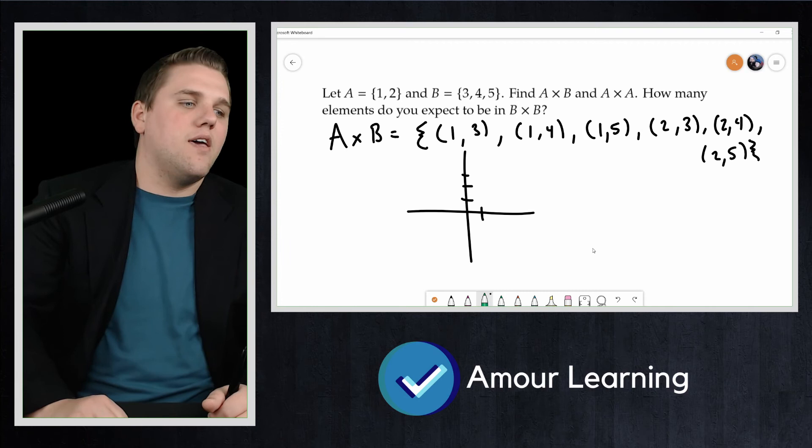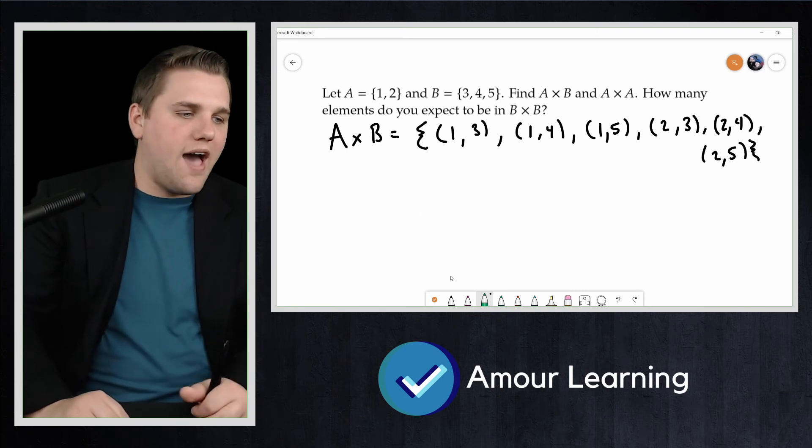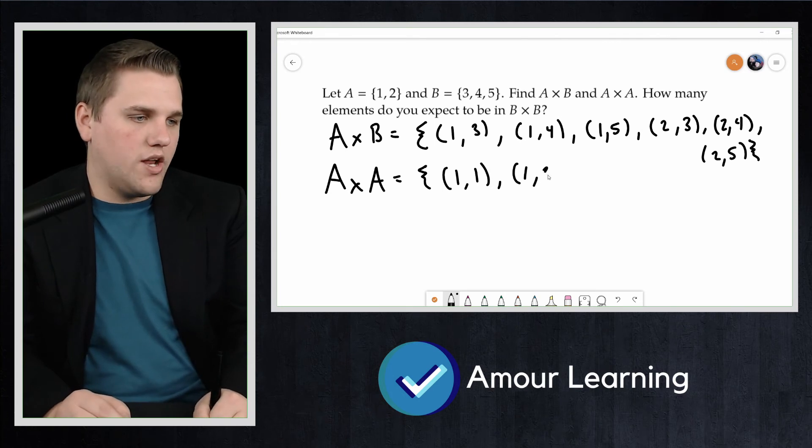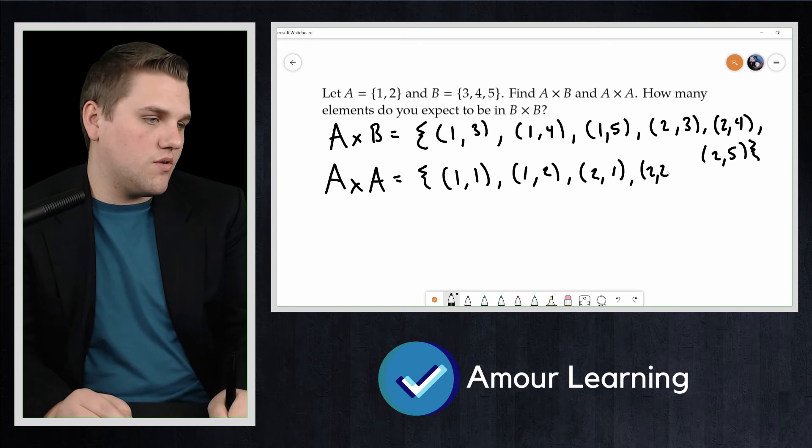So with A cross A, in this case, we have elements such as (1,1). We could do (1,2), (2,1), and (2,2). And that's it.